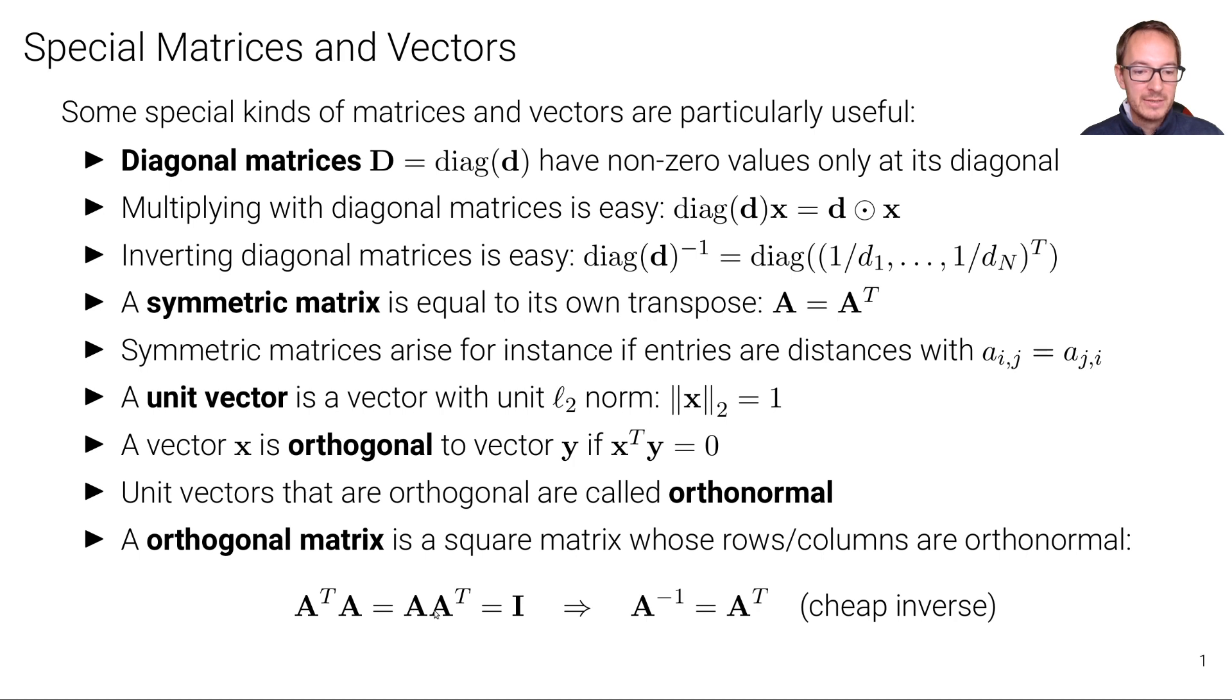Or if we multiply A with A transpose, we get also the identity matrix. And that of course means that the inverse of matrix A is equal to the transpose of matrix A.